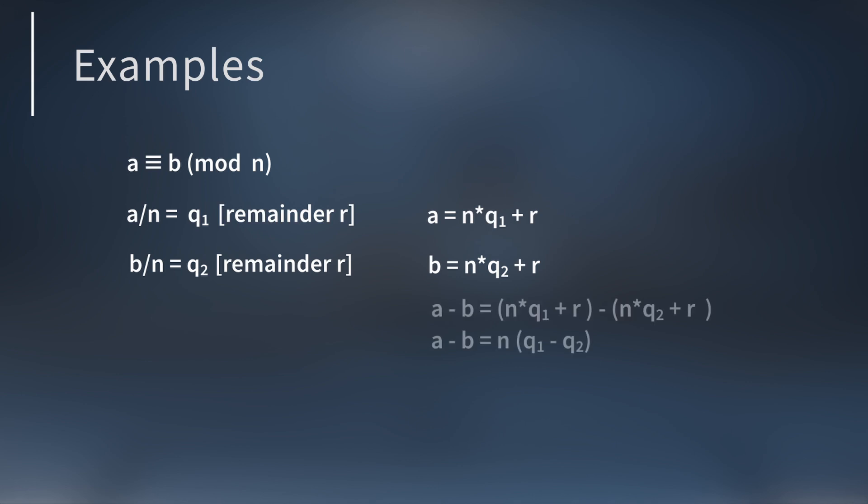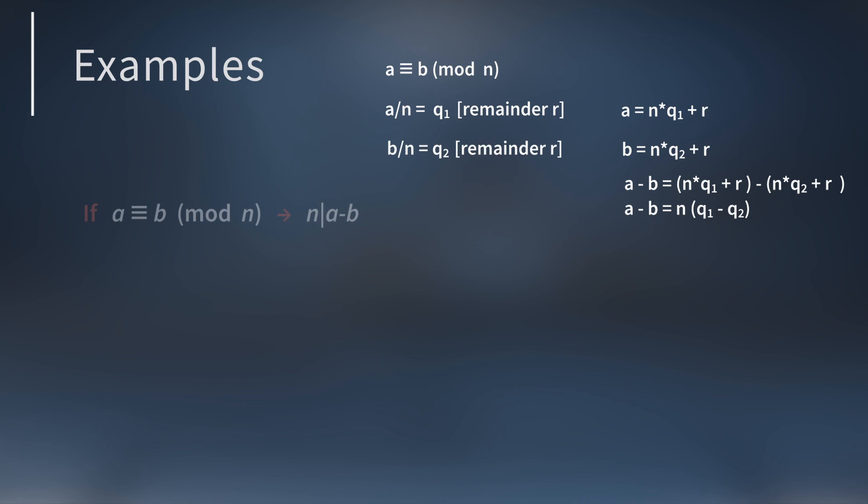If you subtract these two expressions, you get a minus b equals n times the quantity of q1 minus q2. So a minus b is a multiple of n. We've shown that if a is congruent to b mod n, then it's true that n divides a minus b.